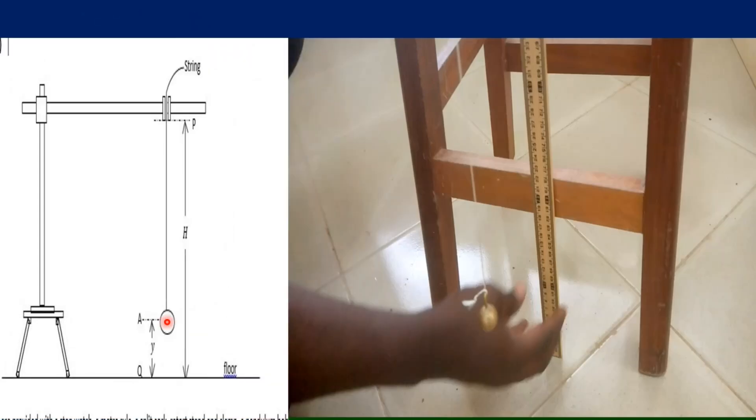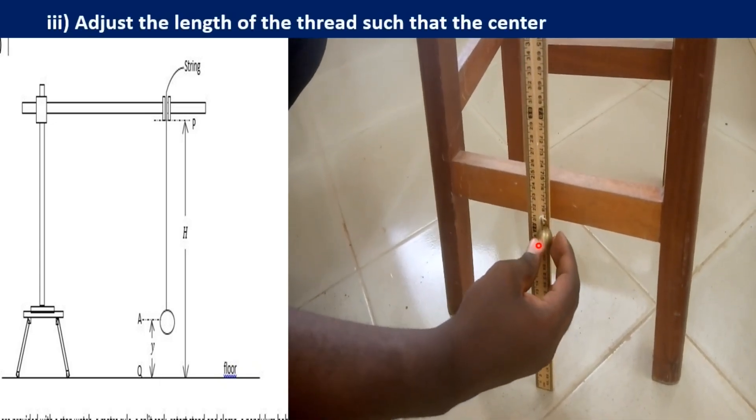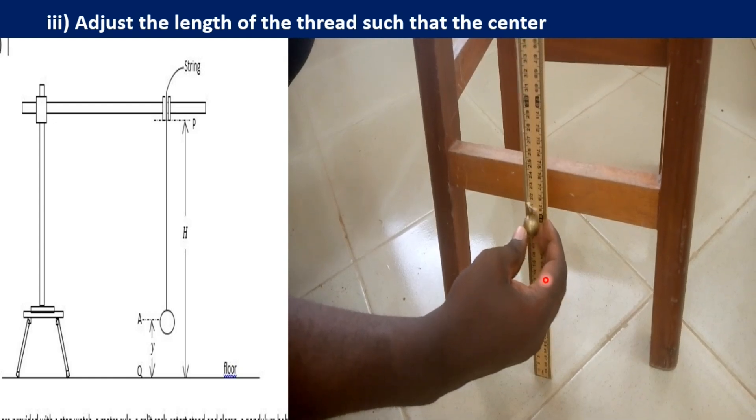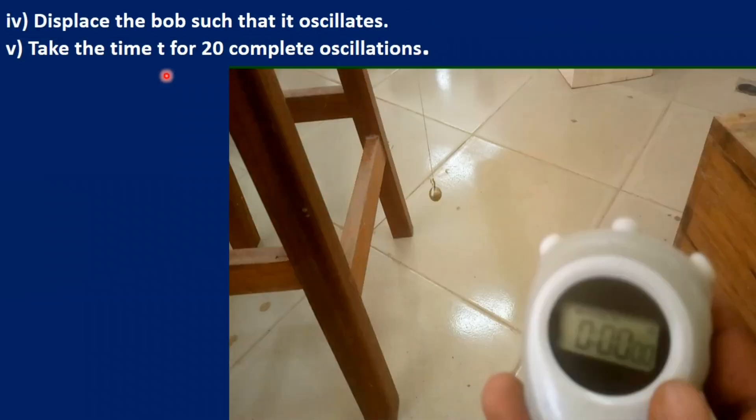At this part of the question, we are to adjust the thread such that the middle of the pendulum bulb is at a distance of 20 cm from the floor. We are going to displace the bulb and then take the time t for 20 complete oscillations. The time taken for the ball to move from the point of release and come back is the time for one complete oscillation.